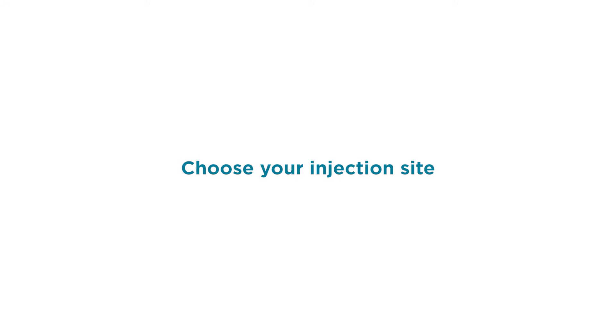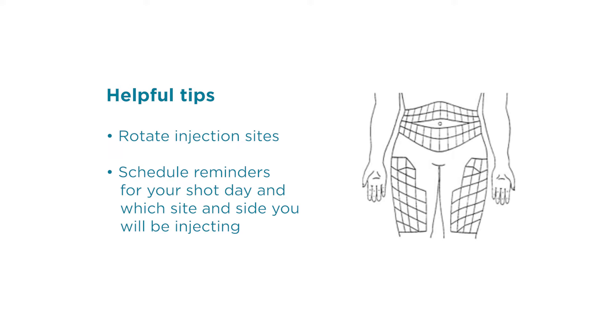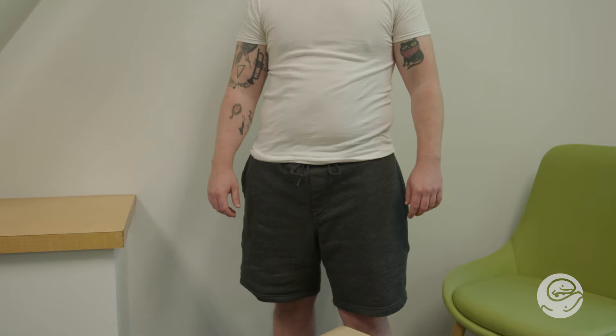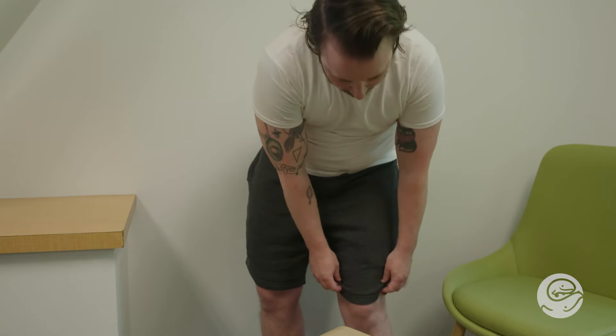Choose your injection site. You will want to rotate your injection site from one injection to the next. Set a reminder in your phone when it is your shot day and which site and side you will give the injection. There are two areas to choose from on your body, your thighs or your stomach area.